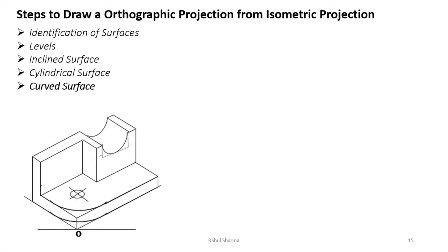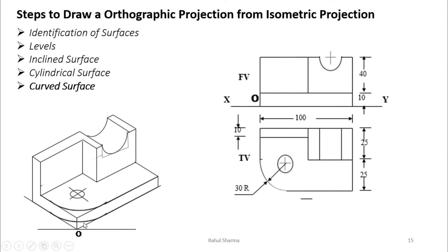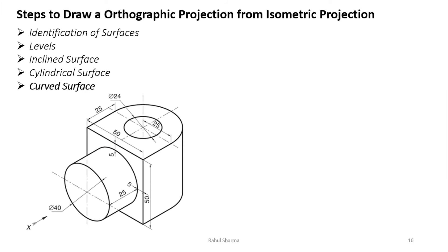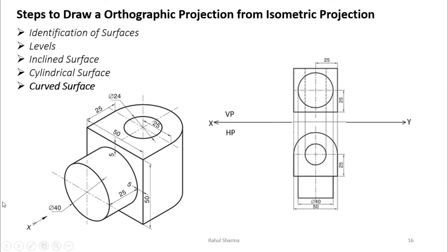For a curved surface — a partial cylinder — the same rule applies. In the front view, the curved part appears as a rectangle. In the top view, the curved surface again shows as a rectangle. For an example combining cylinder and cube: in the front view you see a circle and rectangle. The curve is not visible so no hidden line is needed — it appears as a straight line. In the top view, the cylinder shows as a rectangle.